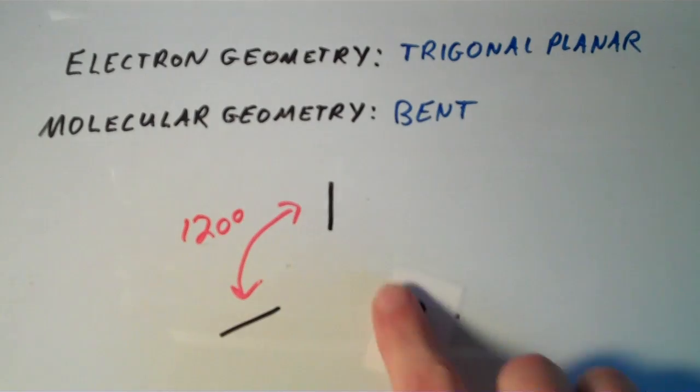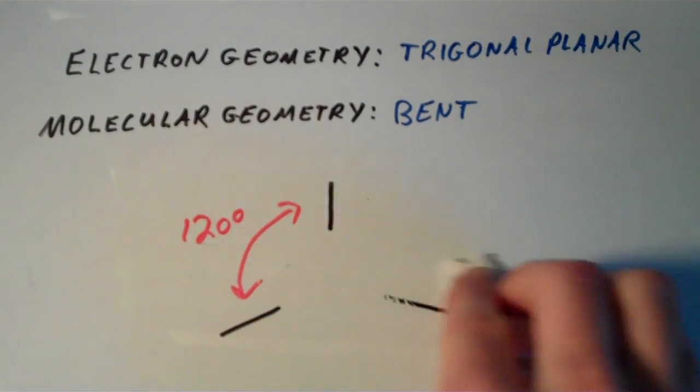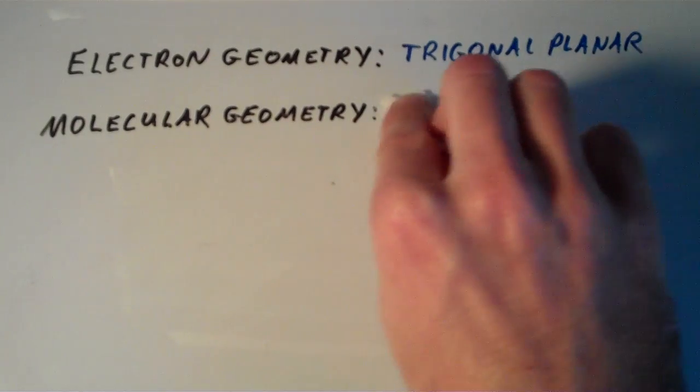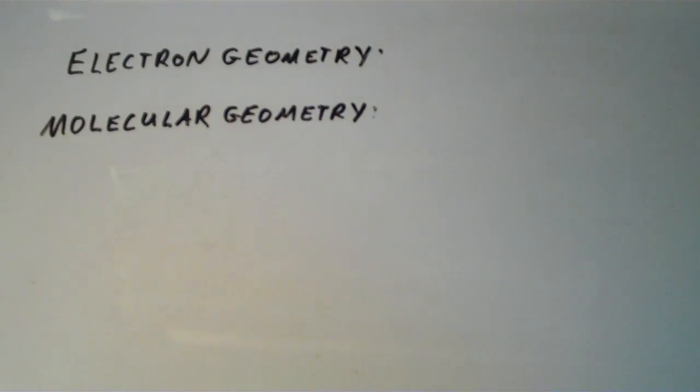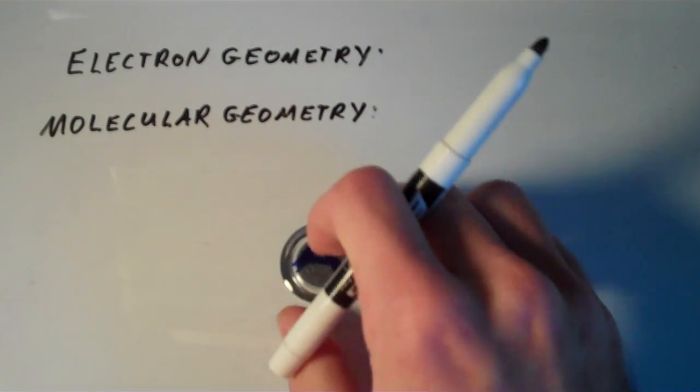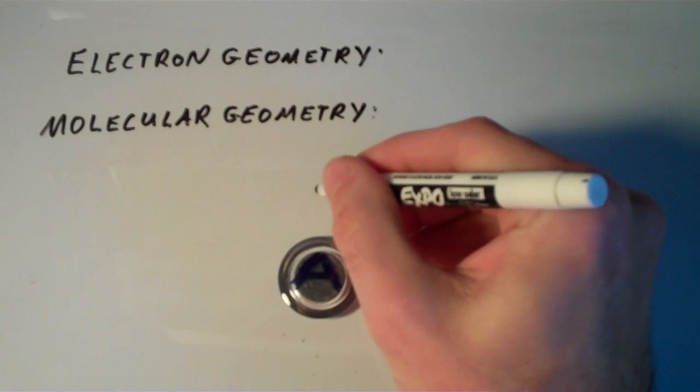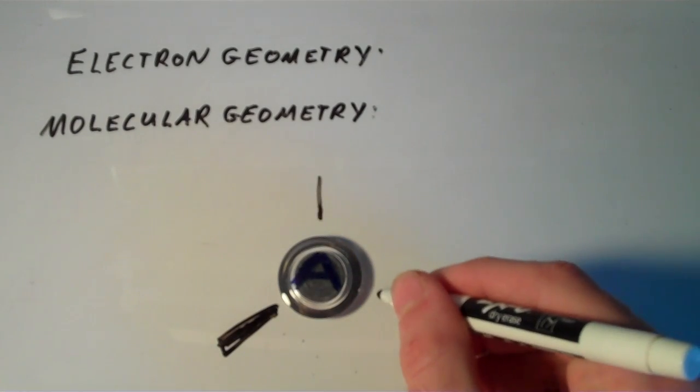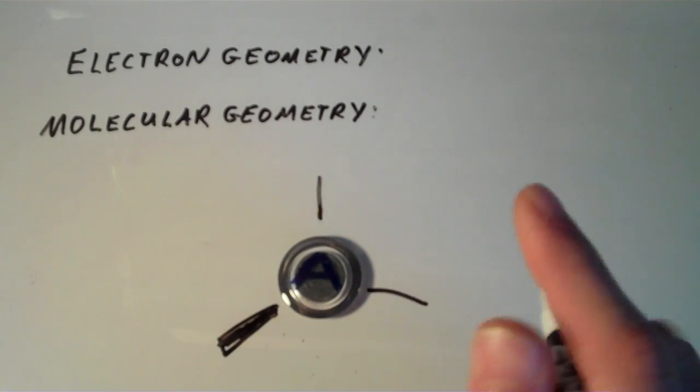So now let's look at four electron groups with lone pairs. So remember that if we have four electron groups around an atom, and they space themselves out as far apart from one another as possible, then we will get a tetrahedral electron geometry.